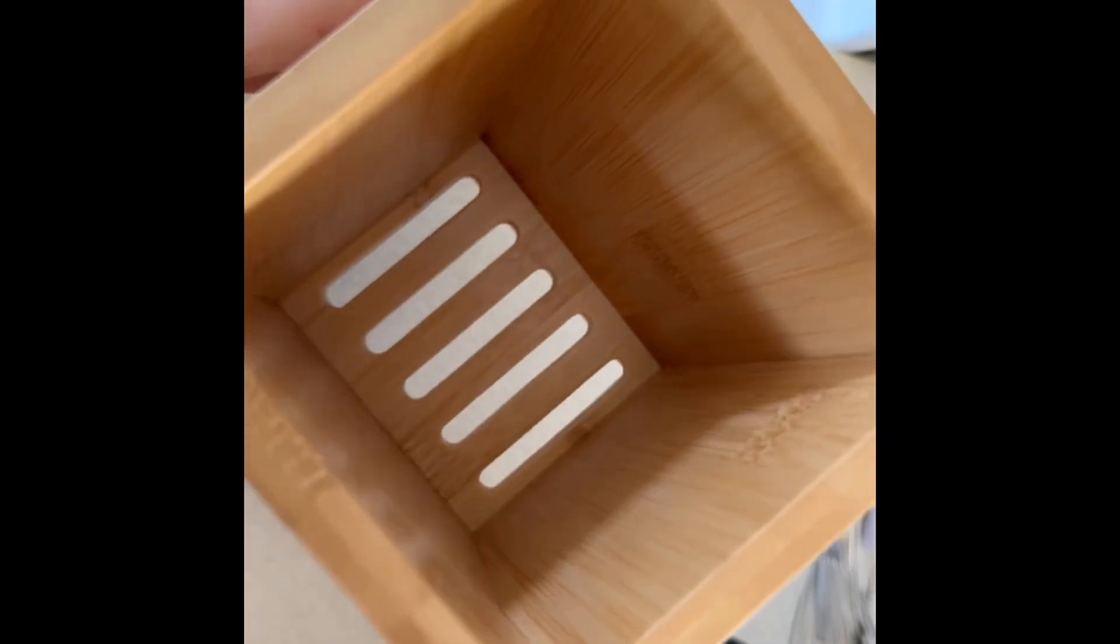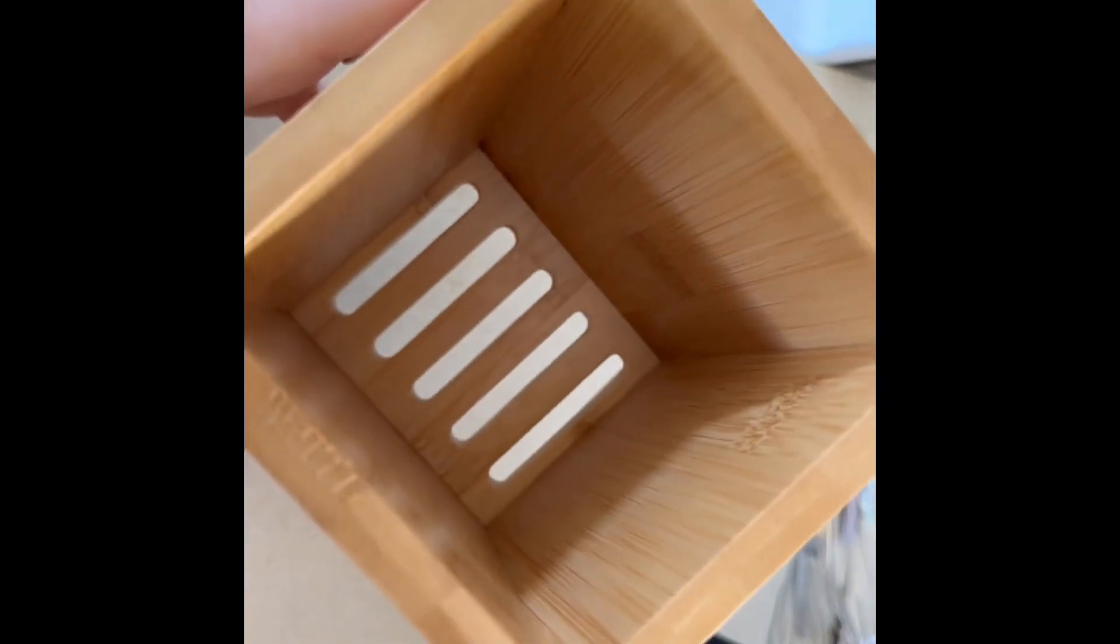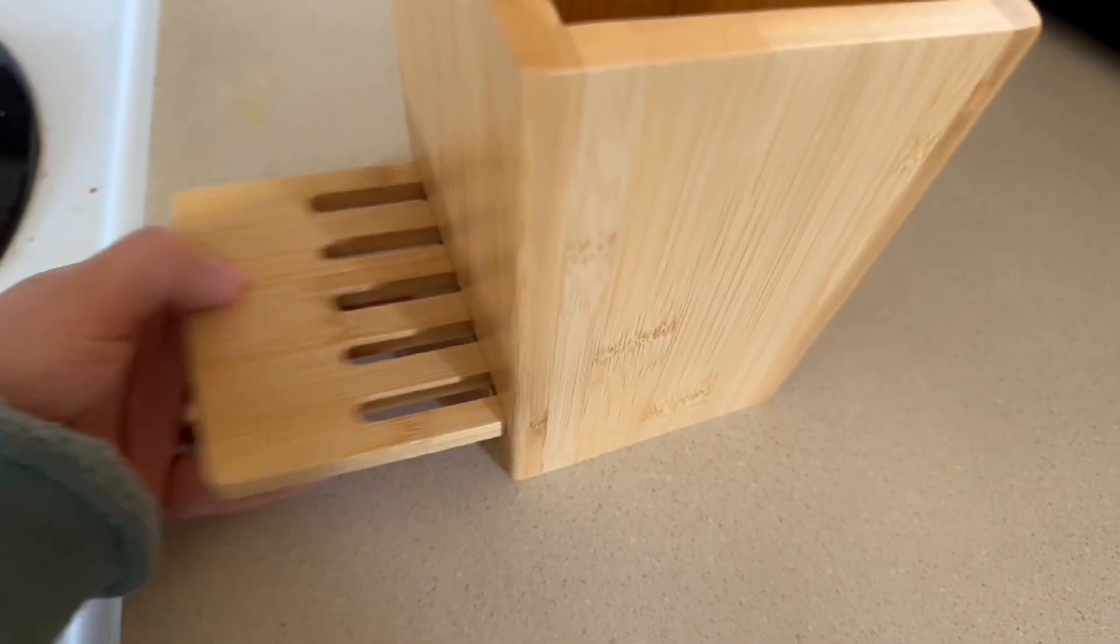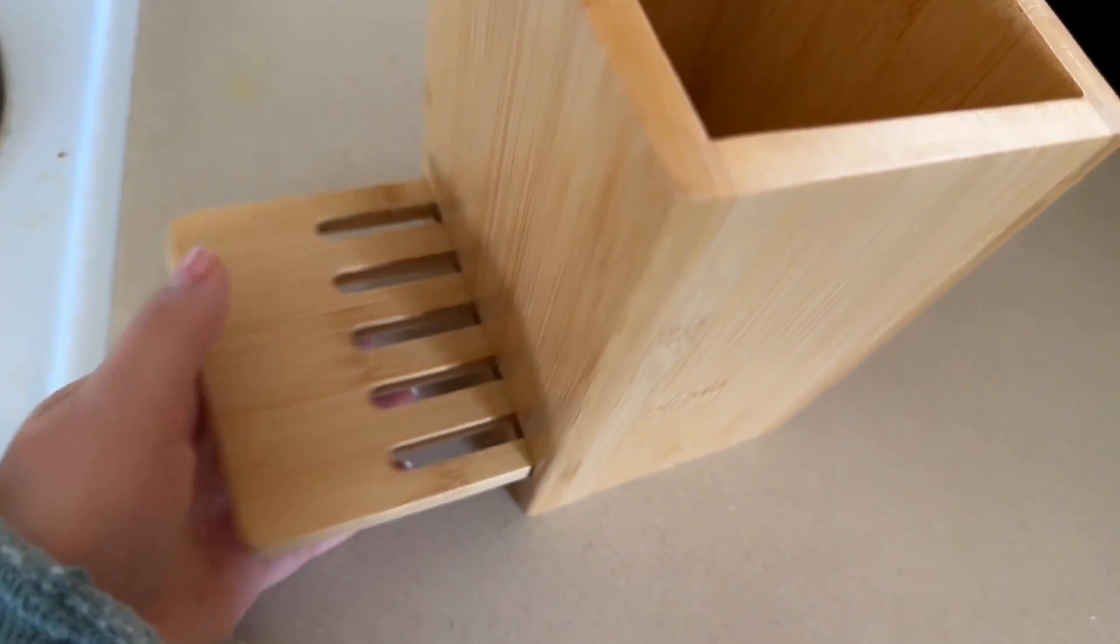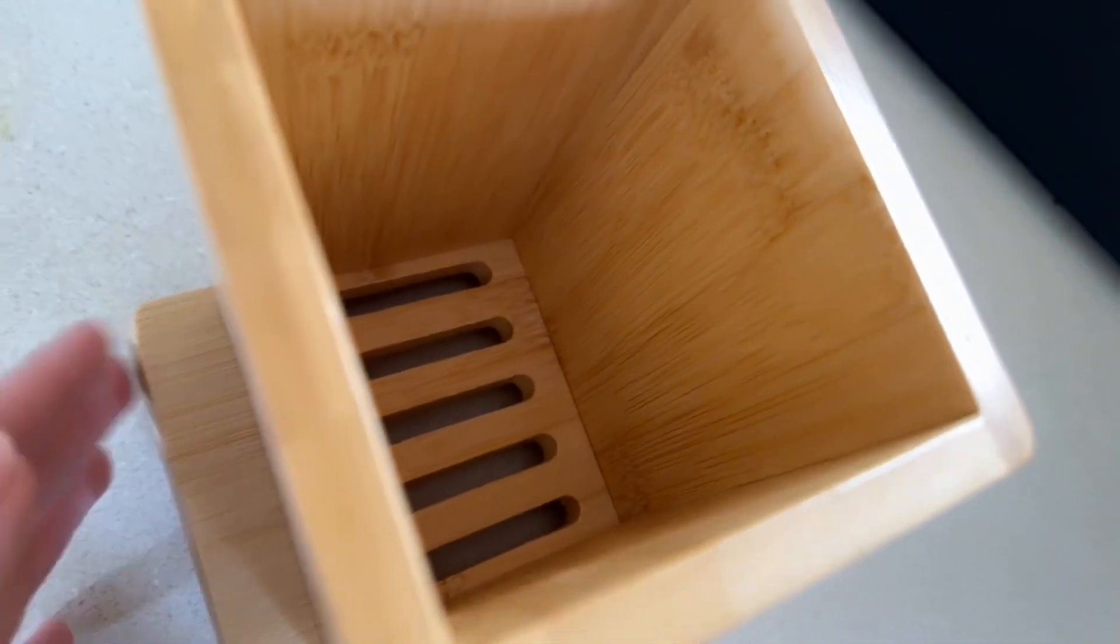The cool thing about this holder is it has a removable bottom magnetic drip tray. So this piece just comes out here and you can see the magnet pieces and then just slides right back in. There's magnets in there as you can see on the corners and so it'll stay in there.